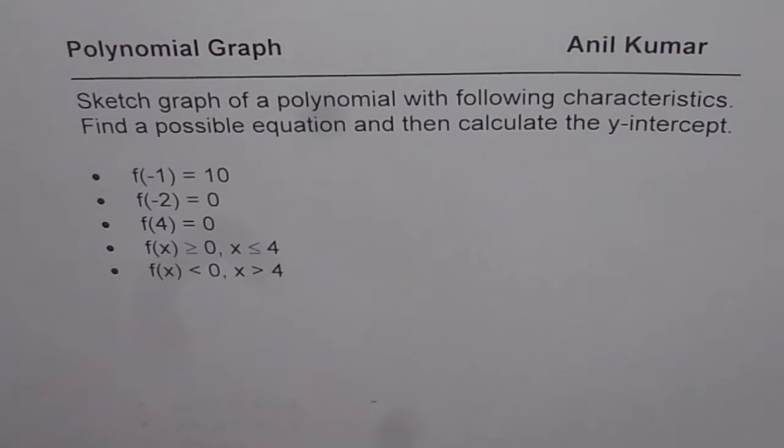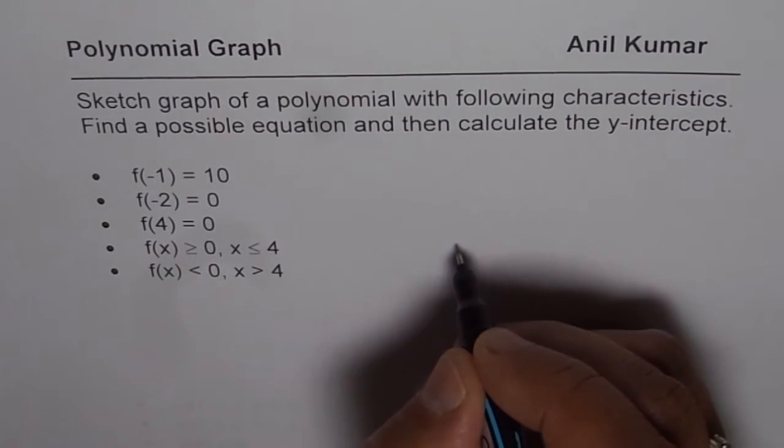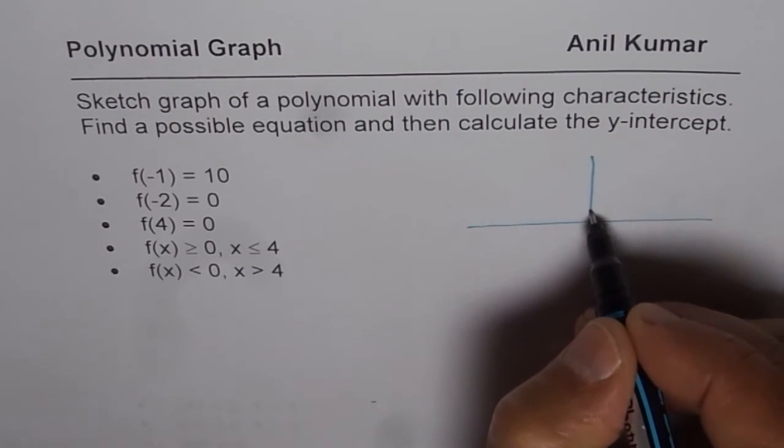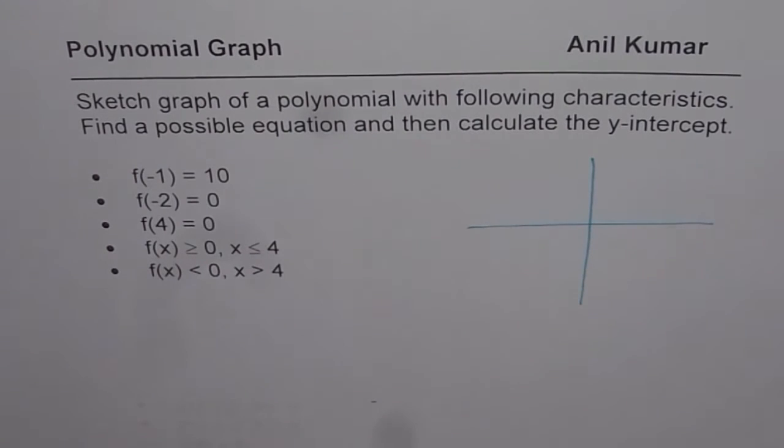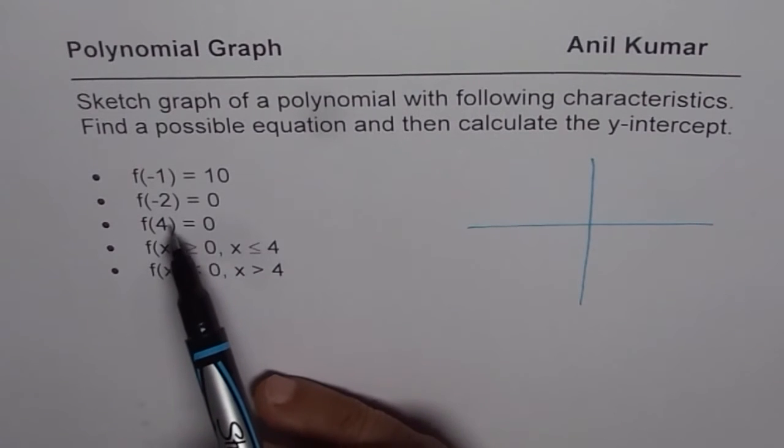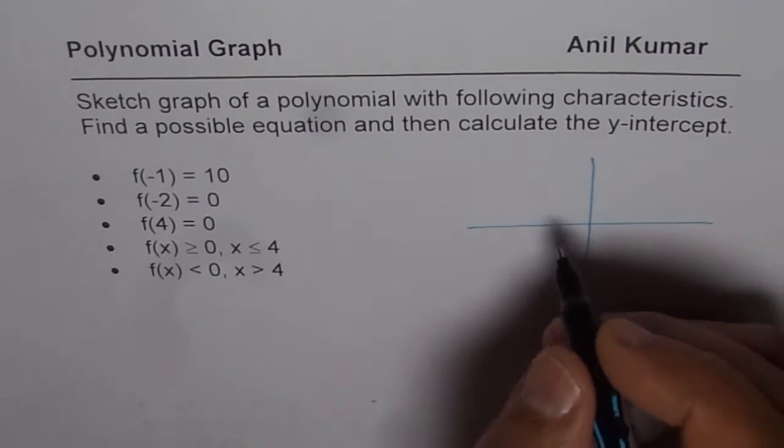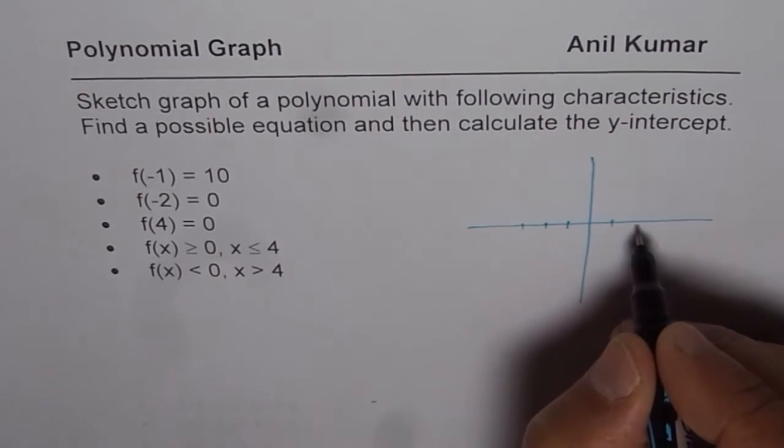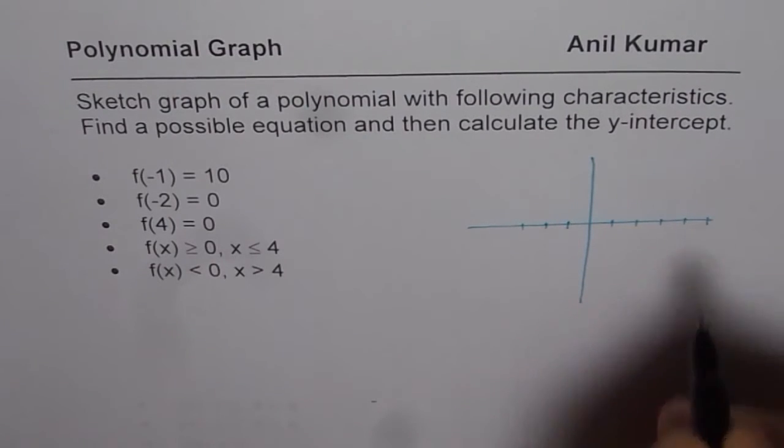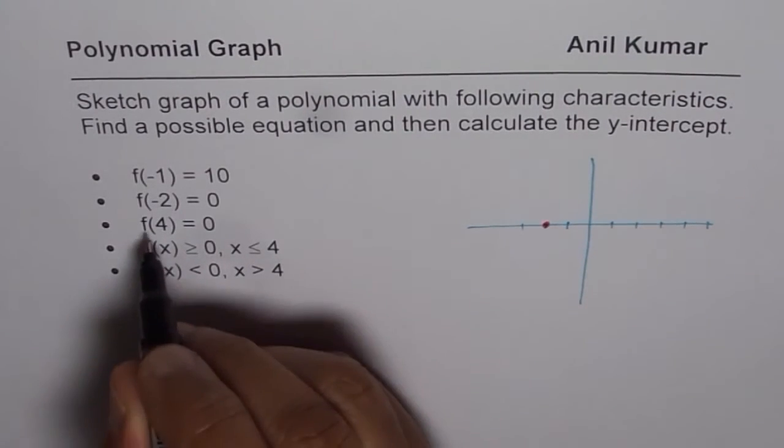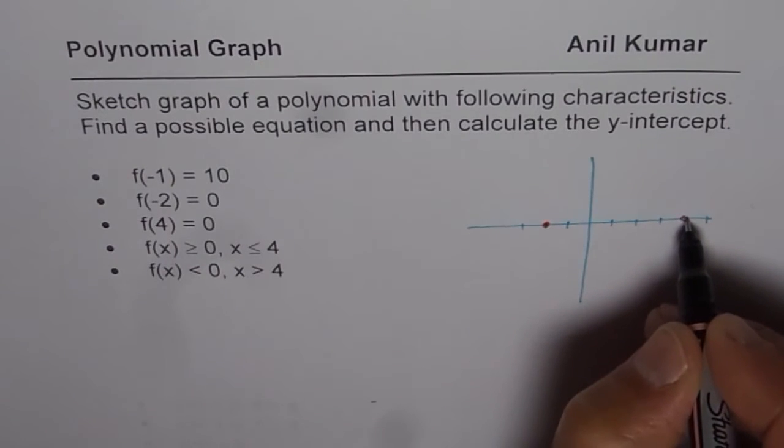Well in such questions you may have different answers. So let us just make a rough sketch for this particular situation. Many times you need trial and error to get it right. Now what we are given here is two zeros which are at minus 2 and 4 and value of function at minus 1. So let us say this is minus 1, this is minus 2. And on this side we have 1, 2, 3, 4, 5. So let me place the two zeros. Minus 2, we have a zero. And at 4 we have 0. 1, 2, 3, 4. So we have a zero there.